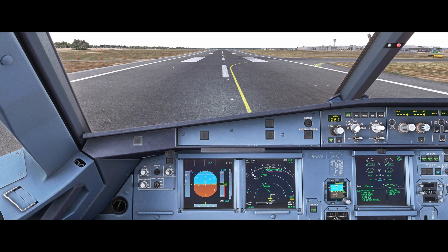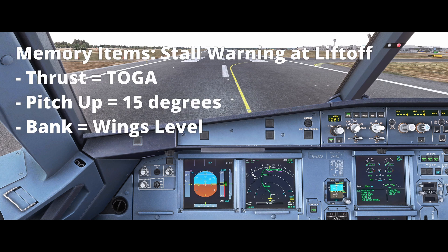So we're going to run through a takeoff and the required actions. The actions for this are: thrust to TOGA, pitch up to 15 degrees, and we must be wings level. Those are the three actions required for this occurrence.